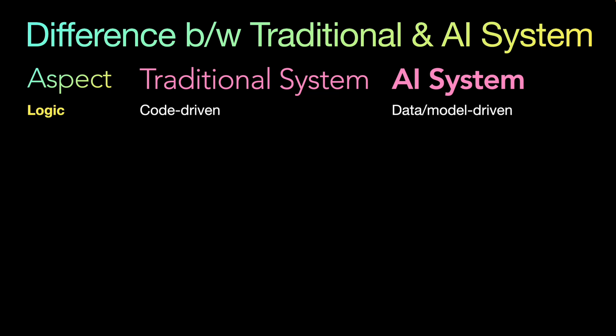It's important to understand the difference between a traditional system and an AI system. In a traditional system, the logic is code-driven — we write programming code and that drives the logic. In AI systems, it is data or model driven. The output of a traditional system is deterministic or predictable because it works exactly as coded, but in AI systems it is probabilistic — it learns and gives answers based on data, so there are no fixed rules like 'if X then Y.'